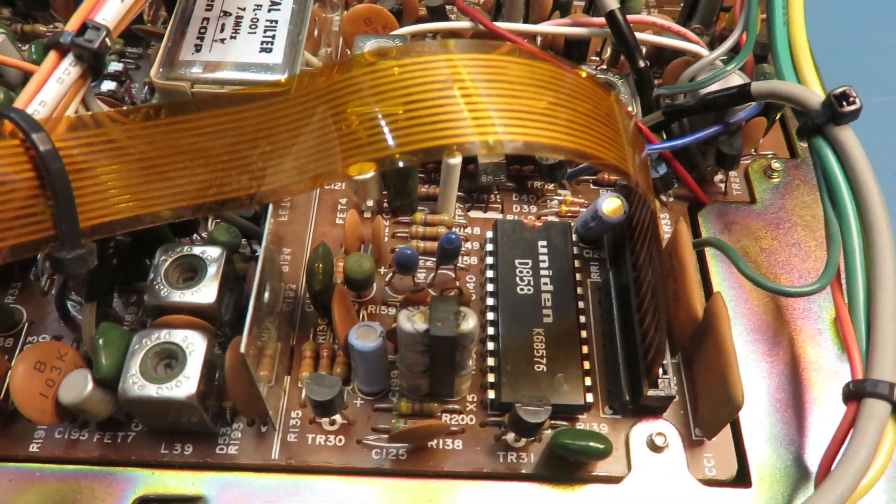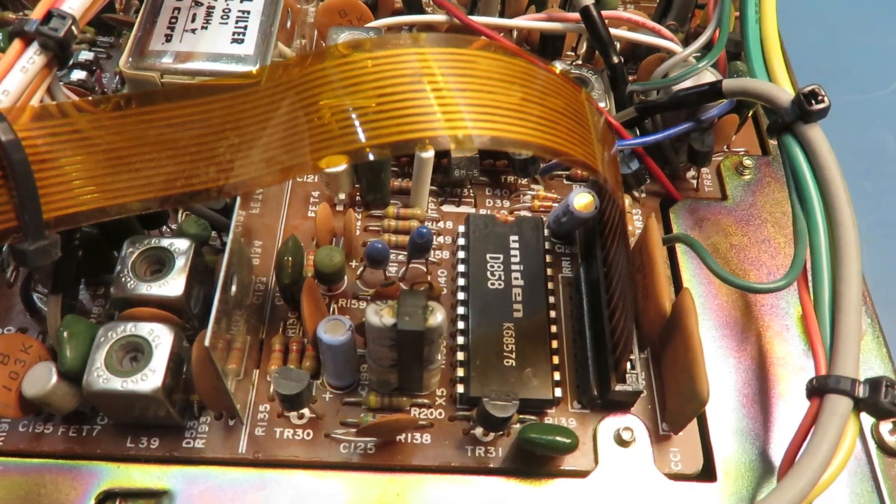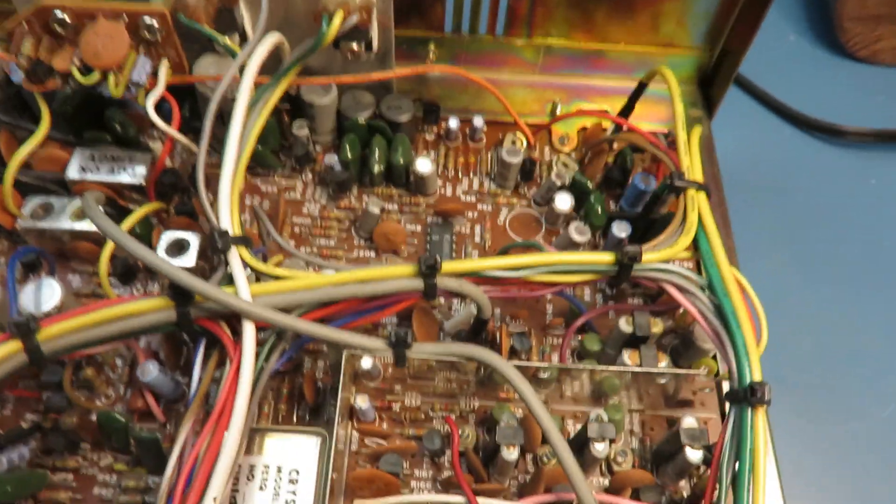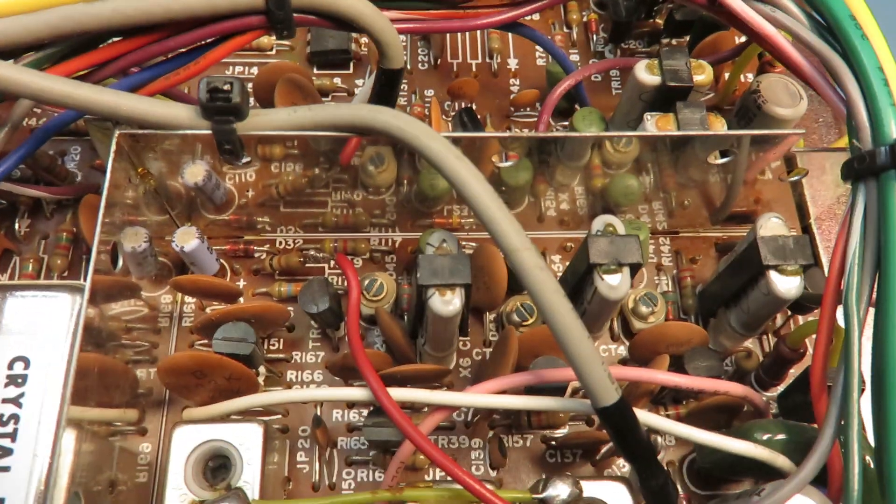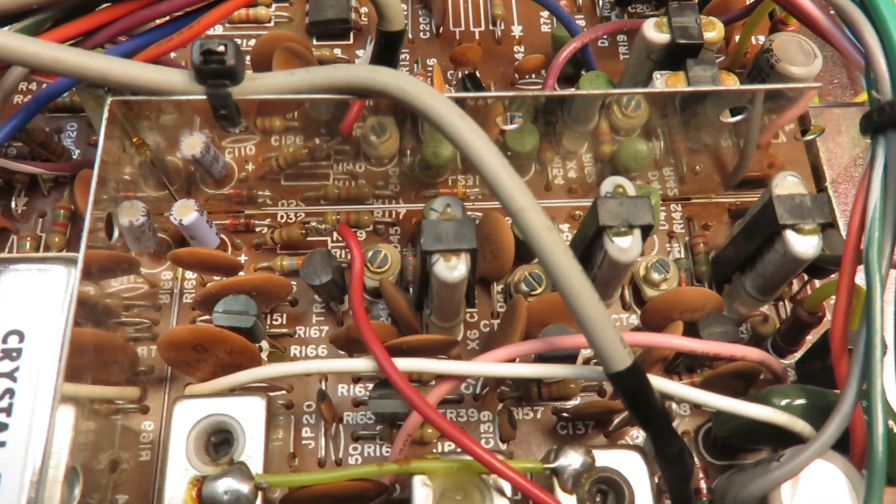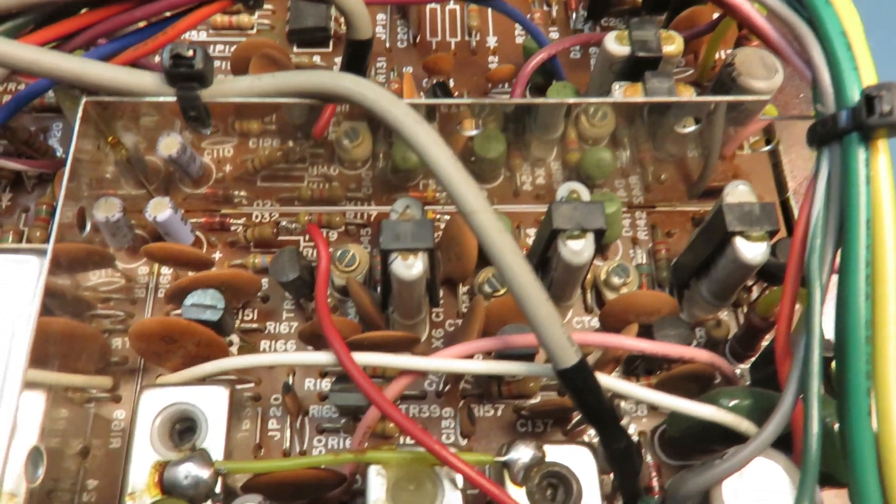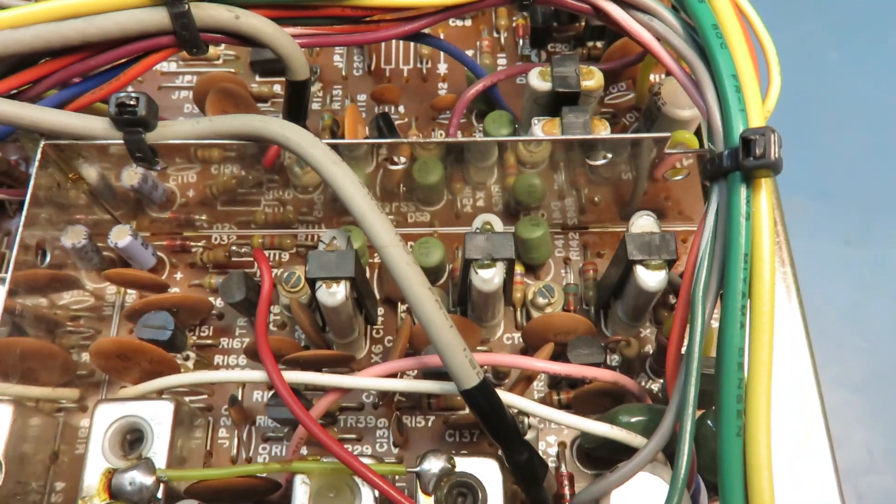It's got three crystals here. The one on the left is for AM, the middle one's for lower sideband, and the one on the right is upper sideband.